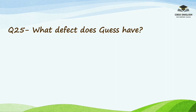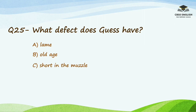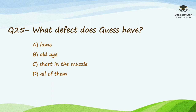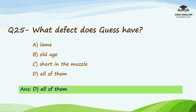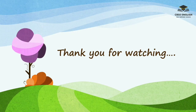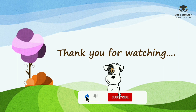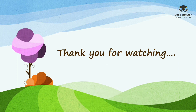Question number 25: What defect does Guess have? Options are lame, old age, short in the muzzle, or all of them. The right answer is all of them. So dear friends, if you have liked this video, please click on like, subscribe the channel, and click on the bell icon to get more videos like this. Thank you very much for watching.